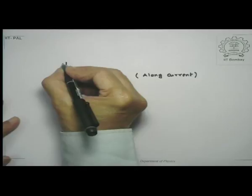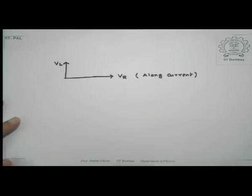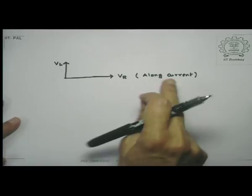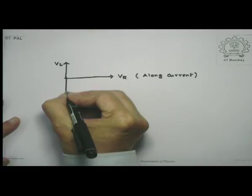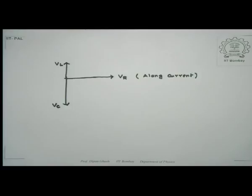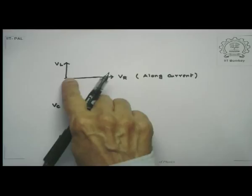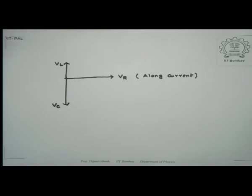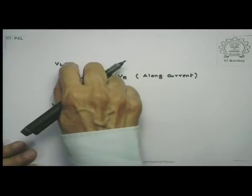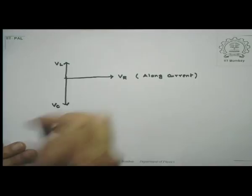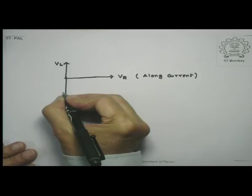For a capacitor, since the capacitive voltage lags the current — because capacitive current leads the voltage — I would put the capacitive voltage along the opposite direction. Let me, without loss of generality, take the capacitive voltage to be larger than the inductive voltage. The net voltage due to the inductor and the capacitor, because they are aligned oppositely, would be Vc minus VL.